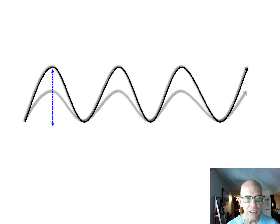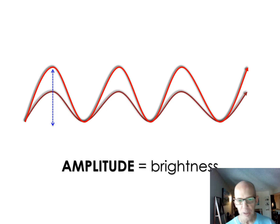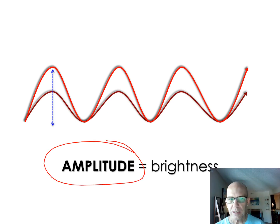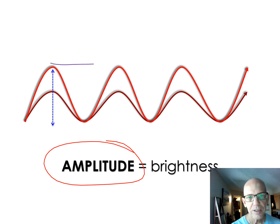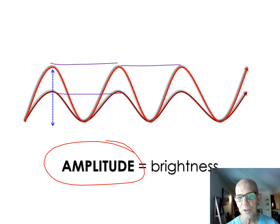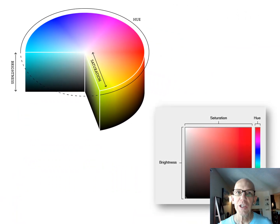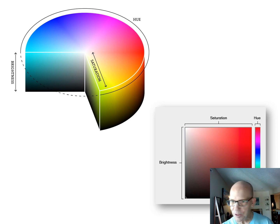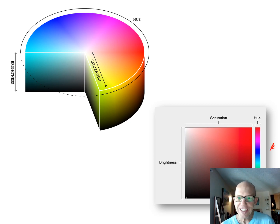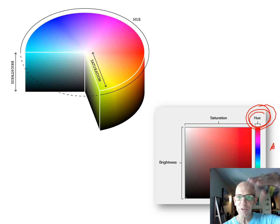The other feature of the wave is how tall it is — that's amplitude. Amplitude determines brightness. Two waves can have the same wavelength — both red — but different amplitudes, meaning one is a brighter red than the other. In Photoshop or computer color programs, you pick the hue — a fancy word for color — determined by wavelength, and the brightness, determined by amplitude. Saturation is the third property, relating to opacity or how see-through the color appears.